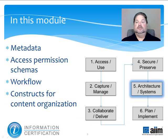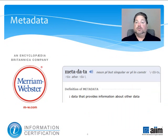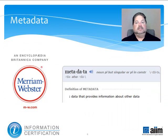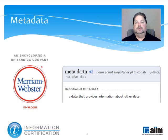In it, we'll discuss some of the fundamentals of information architecture, including metadata, access permission schemas, workflow, and constructs for content organization. One of the most critical components of information architecture is metadata, which is data about data — labels or tags stored either within or externally from content that describes that content for the purpose of identifying and organizing it. The idea behind it is to facilitate search and retrieval by providing relevant hooks to latch onto when looking for particular pieces of information, and no useful information management system can exist without it.